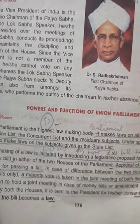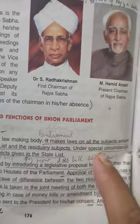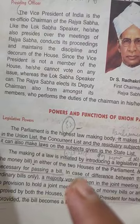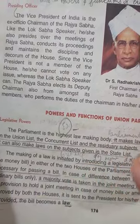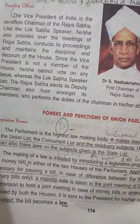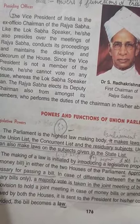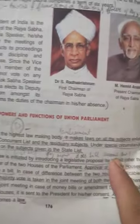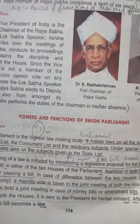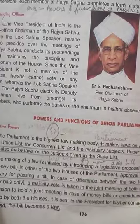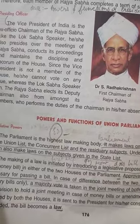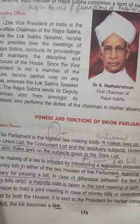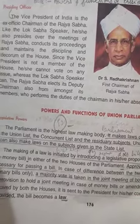Parliament makes law on all the subjects enlisted in the Union list, Concurrent list, and the residuary subjects. We have already discussed the three types of lists: Union list, State list, and Concurrent list. But under special circumstances, such as in an emergency situation or a conflict situation, Parliament also makes law on subjects given in the State list.